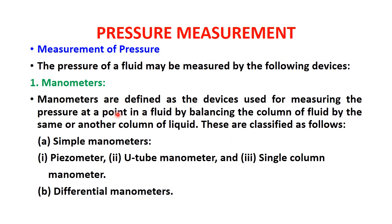Manometers work by balancing the column of fluid using a tube in which either the same liquid or another liquid is used. The pressure is measured in terms of pressure head. Manometers are classified into simple manometers and differential manometers. Simple manometers include the piezometer, U-tube manometer, and single column manometer. The second type is the differential manometer.